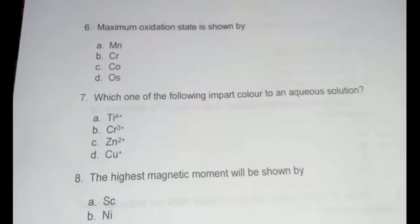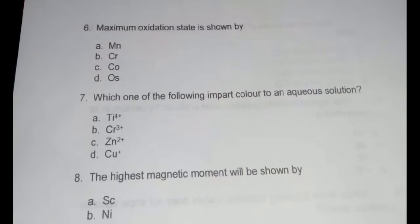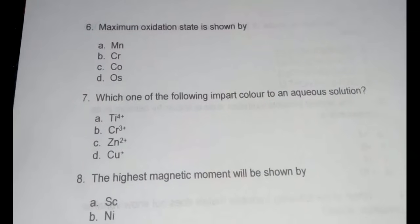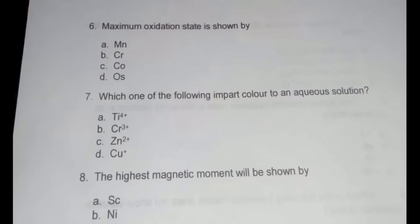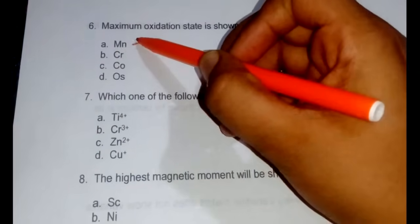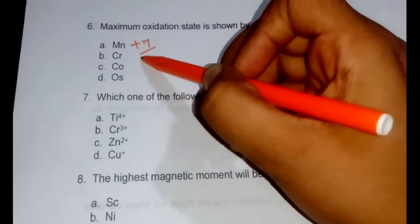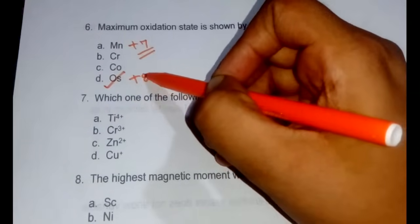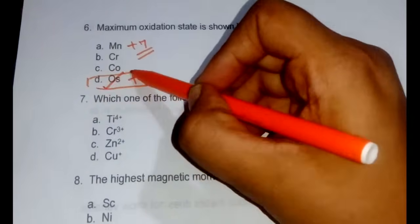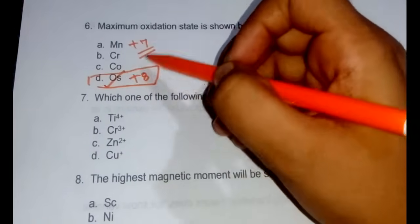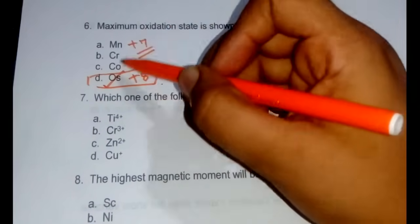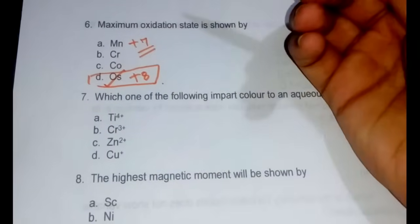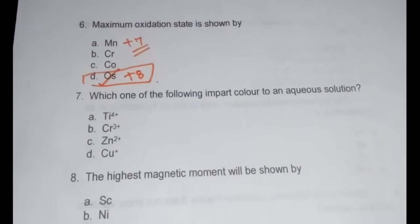The sixth question: maximum (highest) oxidation state is shown by which of the following? Most would think it is manganese because it can show up to +7, but the answer is osmium, because osmium can show a +8 oxidation state. Among these options, the maximum is shown by osmium, followed by manganese at +7.